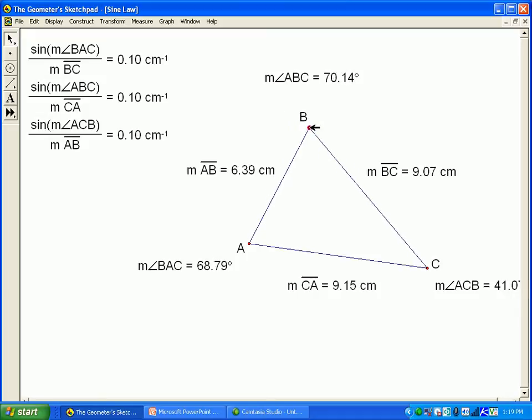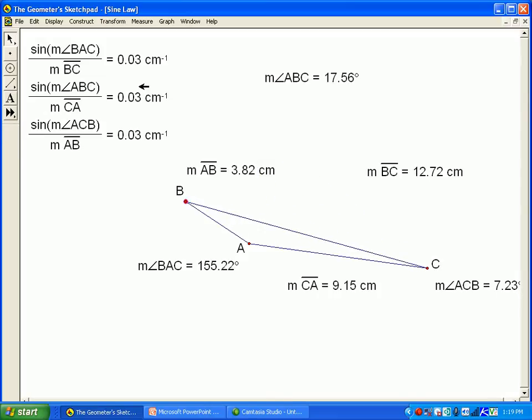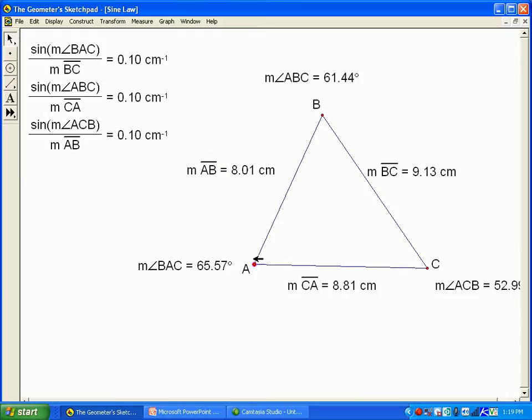If we distort the triangle, the angles and sides can change, and these values can change too, but notice that they're always the same. For example, if I put it up like this, the sine of all the angles divided by their opposite side is 0.07. We can distort the triangle, but all those ratios stay the same.